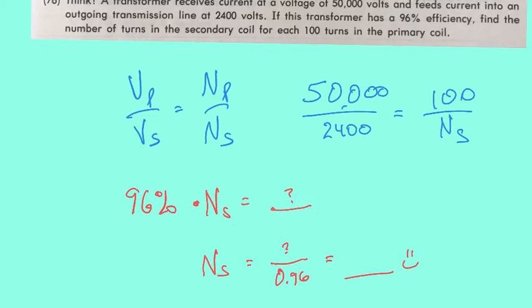Now take the answer you just got for Ns - that's not our final answer yet. Write that same number right here. We have 96% of the actual secondary number of turns equals this decimal number that you got. Now to find the correct answer, we have to divide by the efficiency factor.